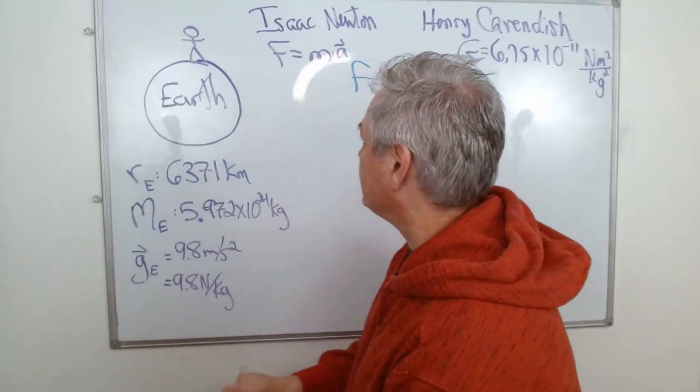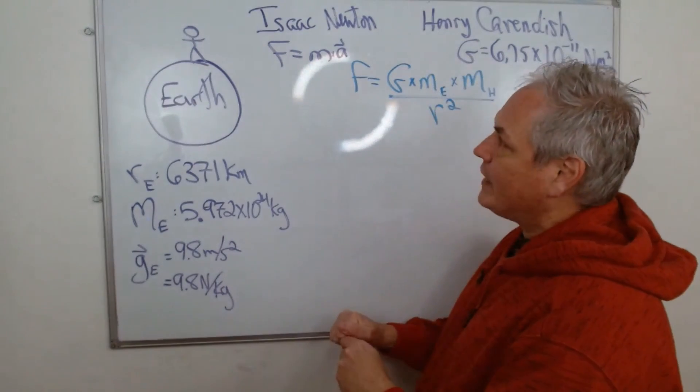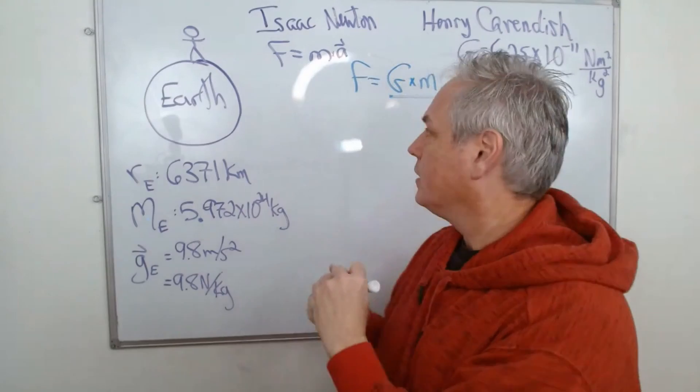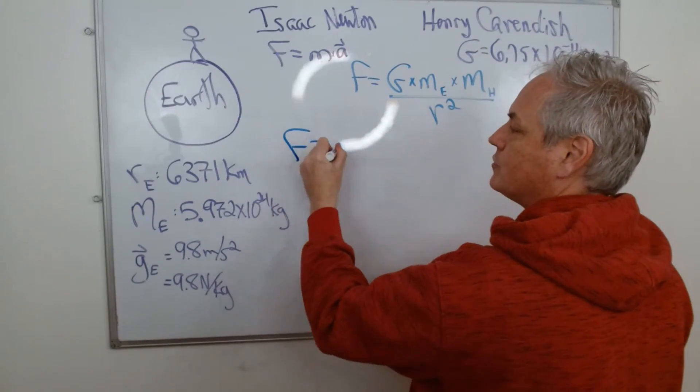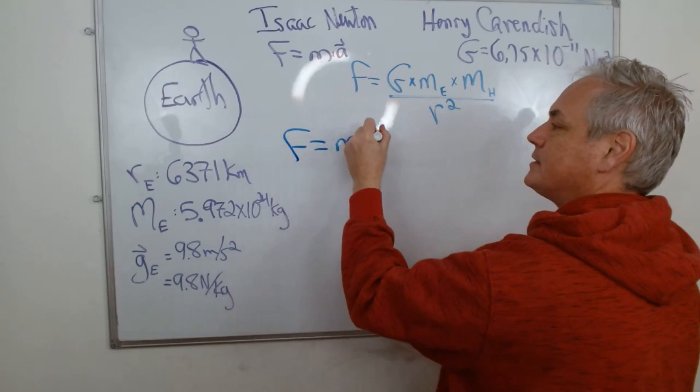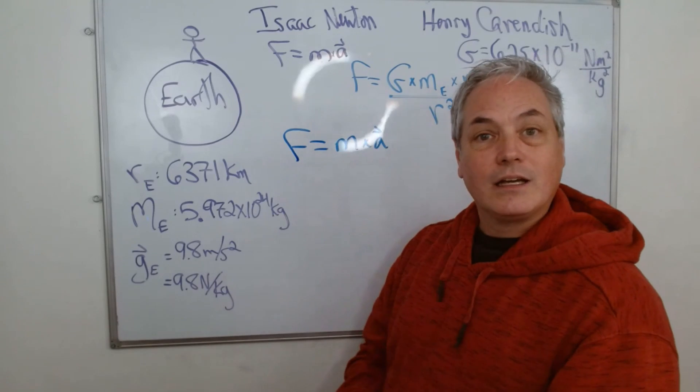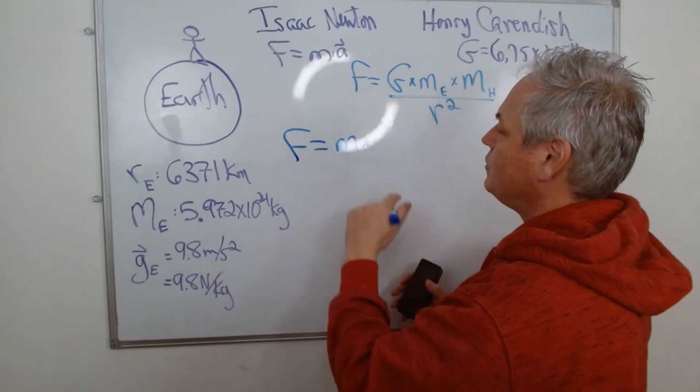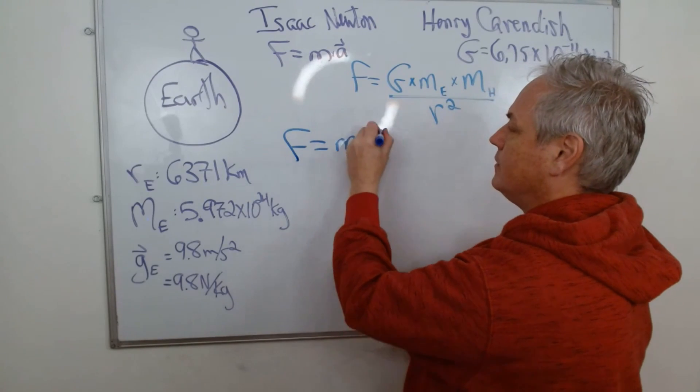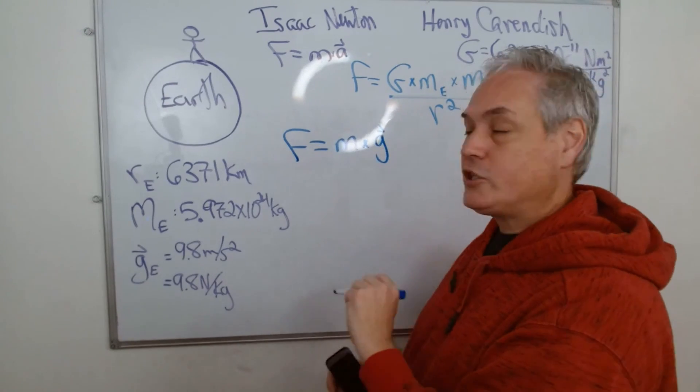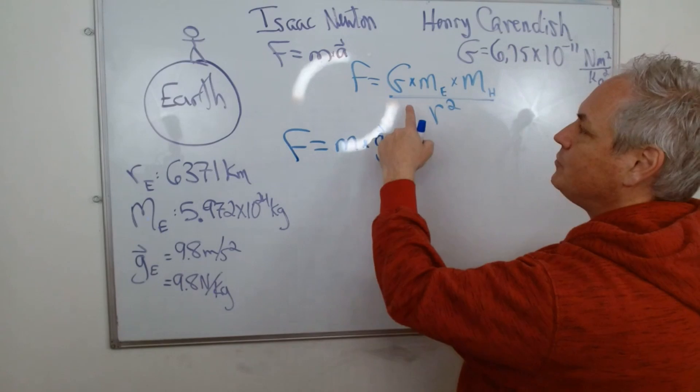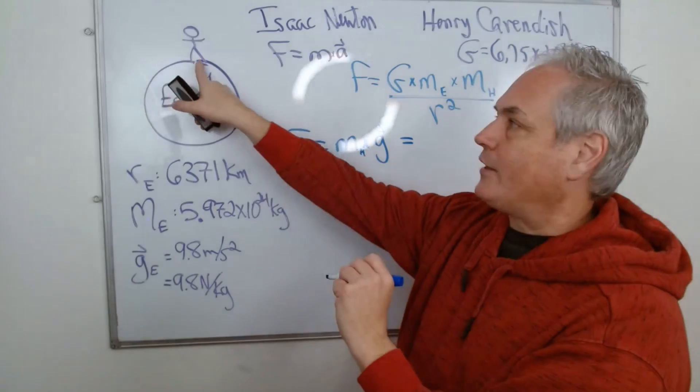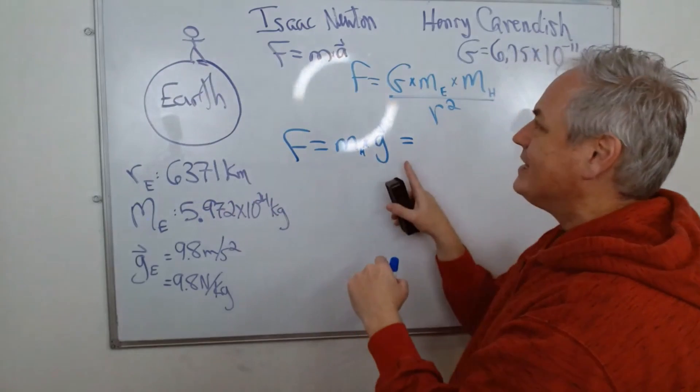So let's see what we can come up with the equations. First of all, we have this idea. Let's see if I can get a good marker. We have here F equals m times a from Isaac Newton. But since we're talking about gravity and planets, we're going to have here the gravitational acceleration, and here that would be the mass of the human, the mass of the object at the surface of the planet.